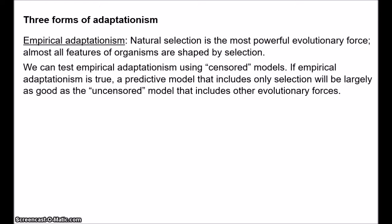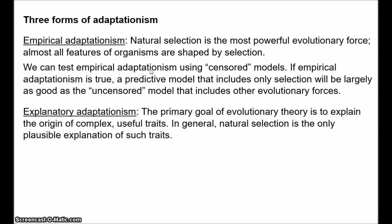The second type is explanatory adaptationism. This is the view that the explanation of adaptation is the central problem for evolutionary theory. The main goal of evolutionary theory is to explain the origin of complex, useful traits. We have a tendency to treat organisms as if they were produced by design. Various features of organisms, like eyes and hands and the processes involved in the transcription of DNA, exhibit sophisticated structure and organisation that initially you would think must have been intentionally designed. Before Darwin, many people like William Paley drew exactly that conclusion — that the incredible complexity of organisms means they were products of design by a god. So explanatory adaptationists say that the main task of evolutionary theory is the explanation of the appearance of design, and since natural selection is often the only plausible explanation of the appearance of design, it has a unique importance.